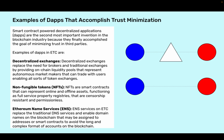Non-fungible tokens, NFTs, are smart contracts that can represent online and offline assets, functioning as full-service property registries that are censorship resistant and permissionless. Ethereum Name Services, ENS, on ETC replace traditional DNS services and enable domain names on the blockchain that may be assigned to addresses or smart contracts, to avoid the long and complex format of accounts on the blockchain.